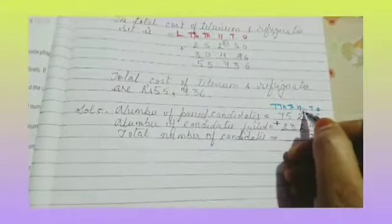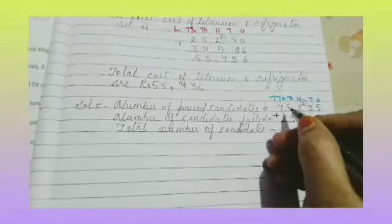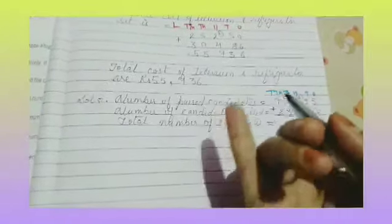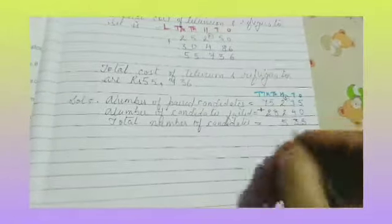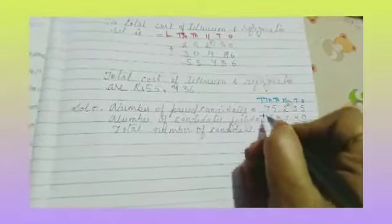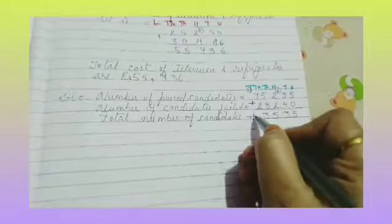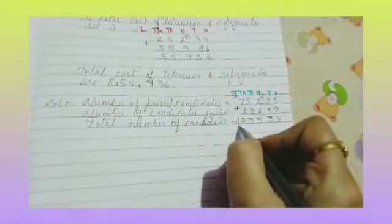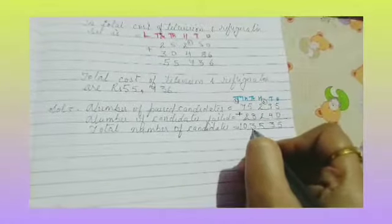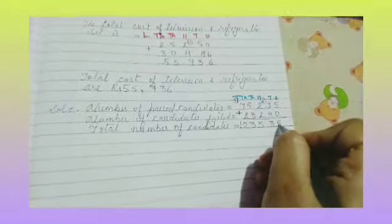2 plus 1 is 3, then 4, then 5. Next column: 5 plus 8 gives 13. Write 3, carry 1. Then 7 plus 1 is 8, plus 2 is 10. So carry 1. The result is 1,03,535.